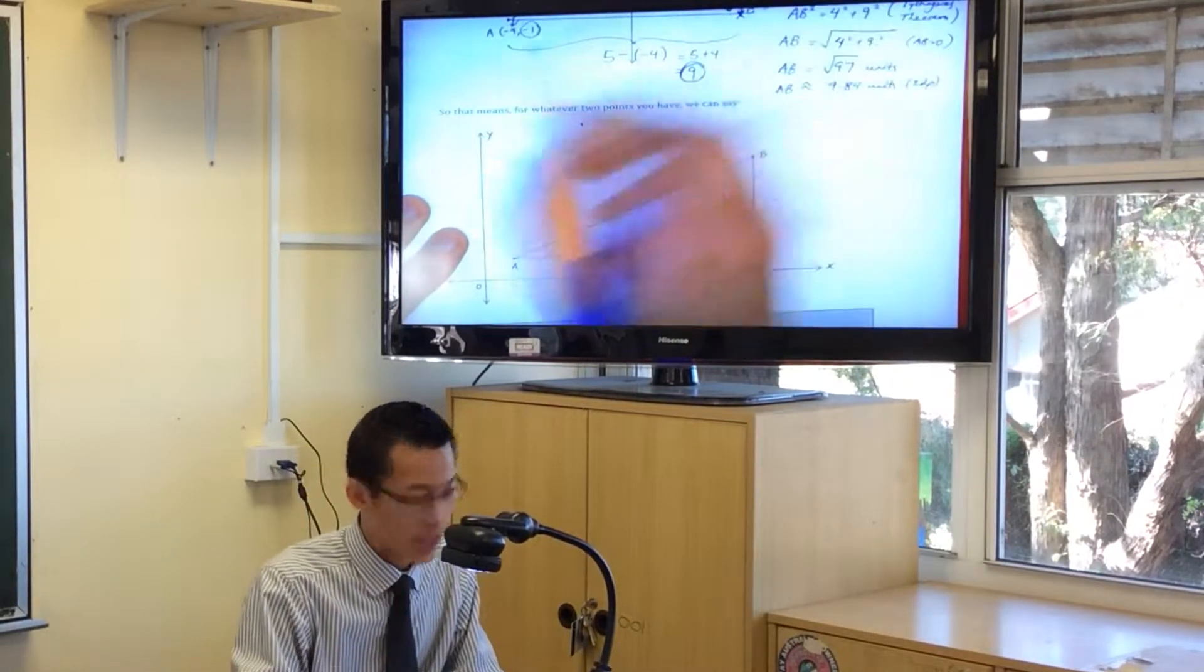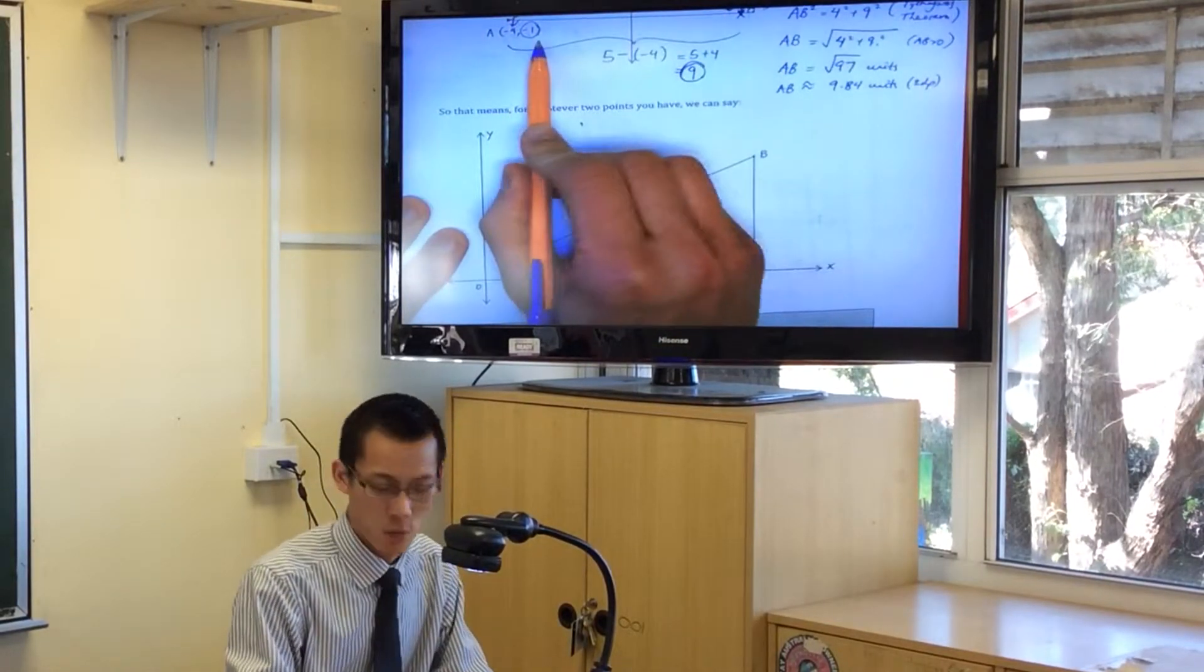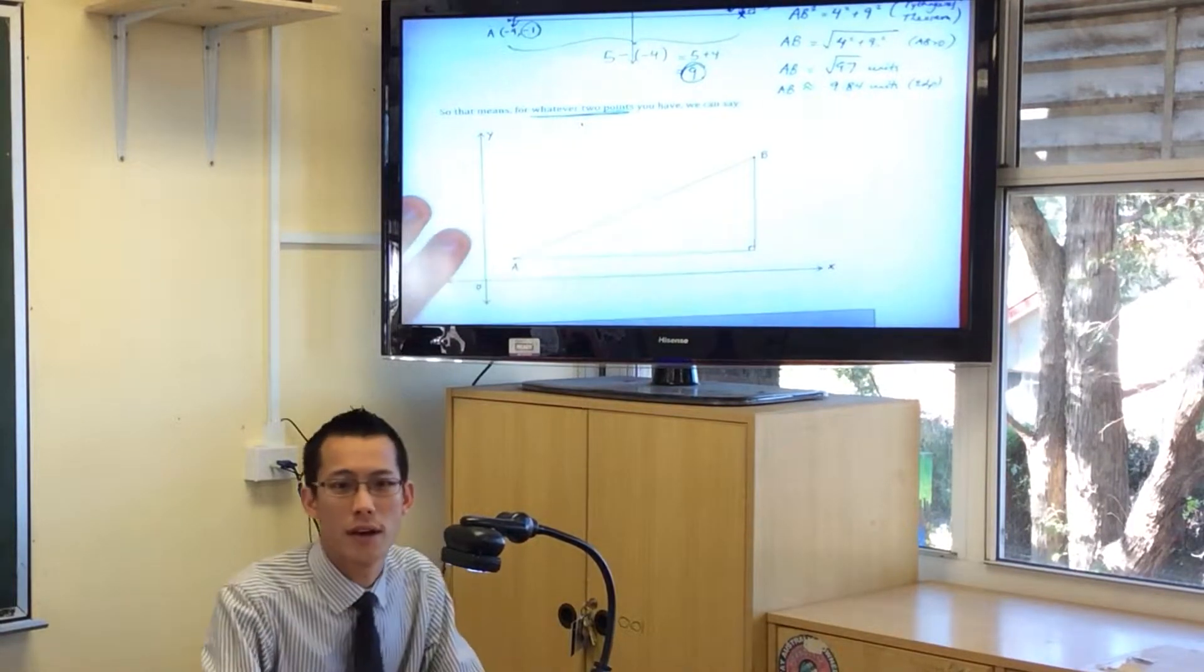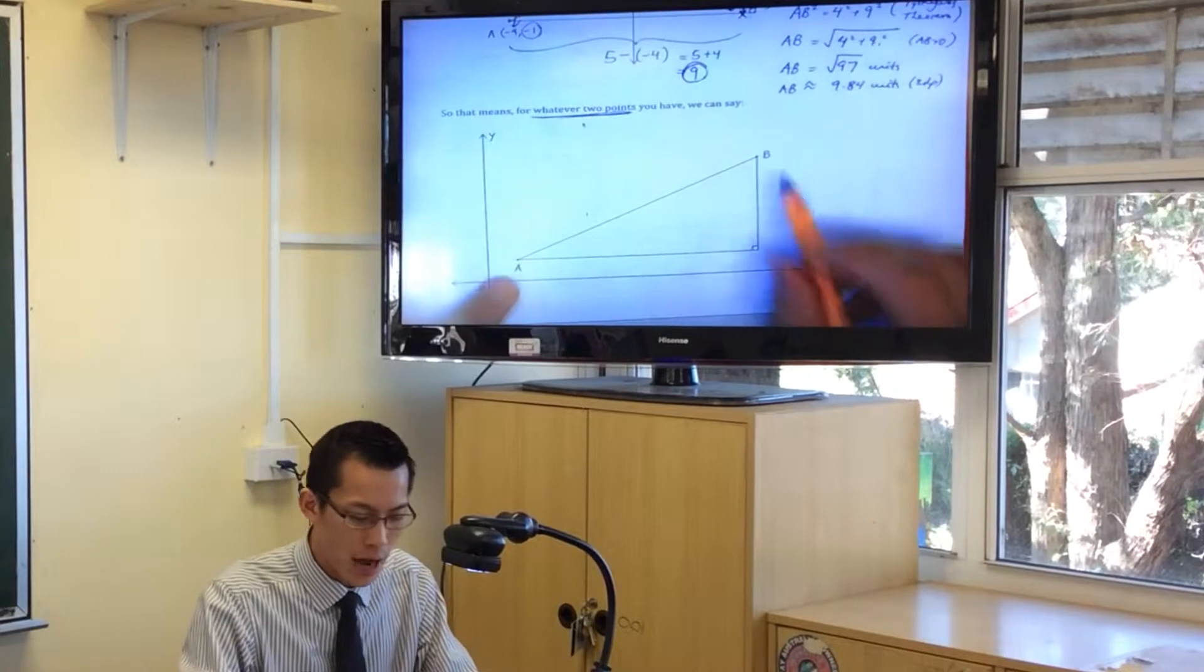Rather than actual numbers, like negative four and negative one, what if you have any two points? Any two points, okay?